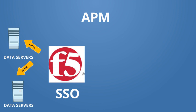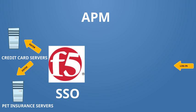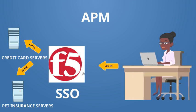From an F5 perspective, you may have an LTM using the LTM service to load balance two different services by the same company. So it might be a credit card service hosted on one VIP load balancing multiple services, and then pet insurance on another VIP load balancing multiple services. And the lady on the screen here is able to access both those services because she signed up for both of them.